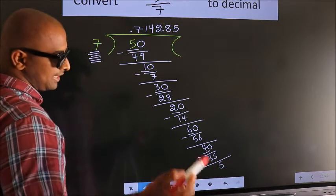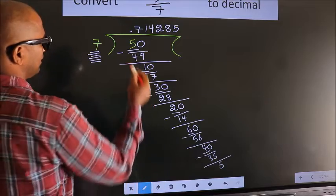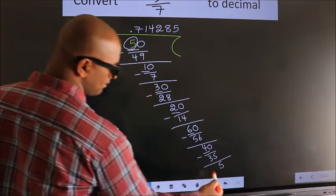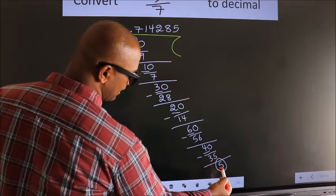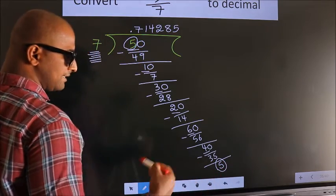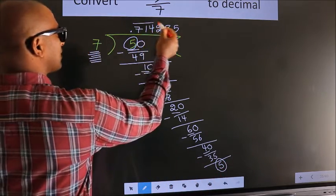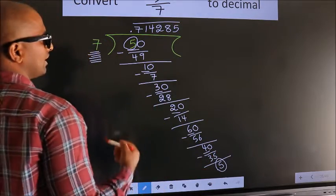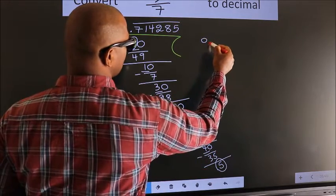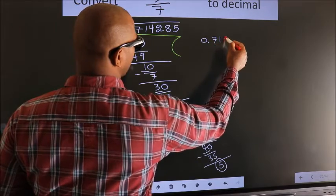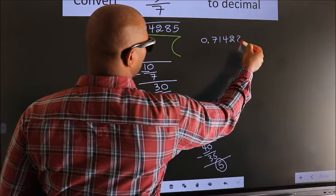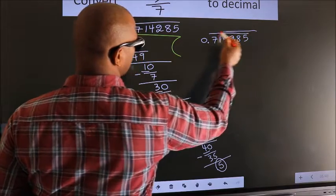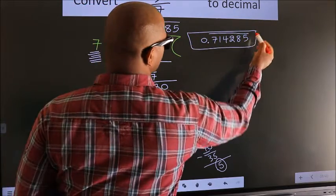Now here you observe: we had 5 here, and we got 5 again here. That means we get a bar on these numbers. Therefore, our answer is 0.714285 with a bar on these numbers. This is our answer.